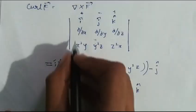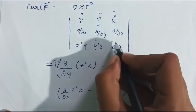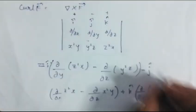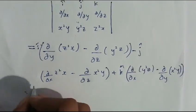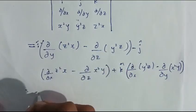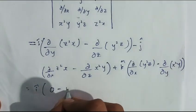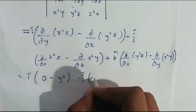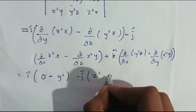For the ĵ-cap component, we neglect the relevant row and column and consider (∂/∂x)(z²x) and (∂/∂z)(x²y). For the k̂-cap component we take (∂/∂x)(y²z) minus (∂/∂y)(x²y). The determinant expansion gives: î[(∂/∂y)(z²x) - (∂/∂z)(y²z)] - ĵ[(∂/∂x)(z²x) - (∂/∂z)(x²y)] + k̂[(∂/∂x)(y²z) - (∂/∂y)(x²y)].